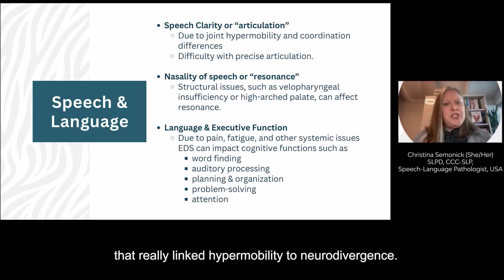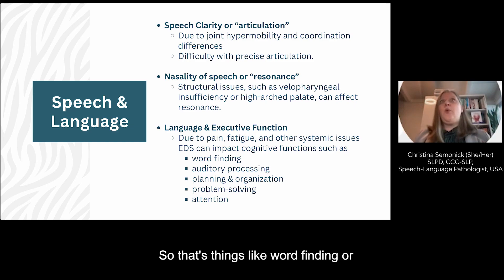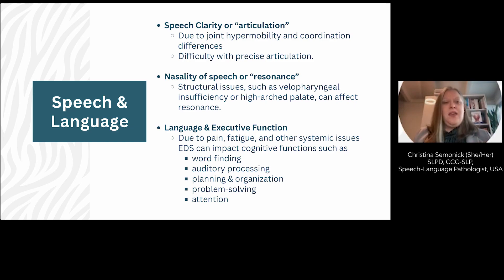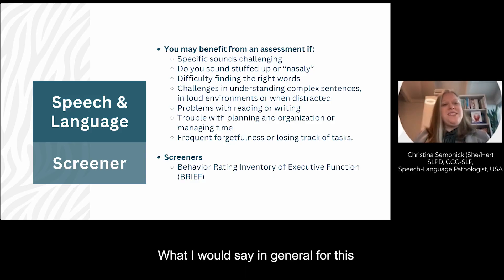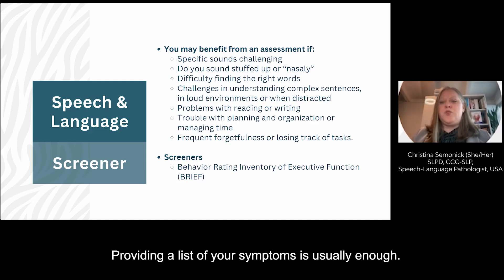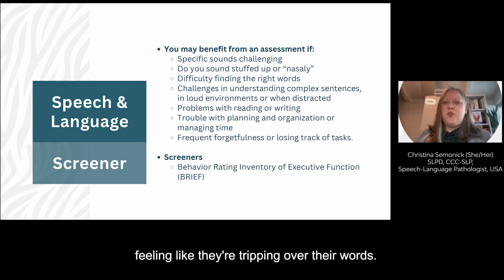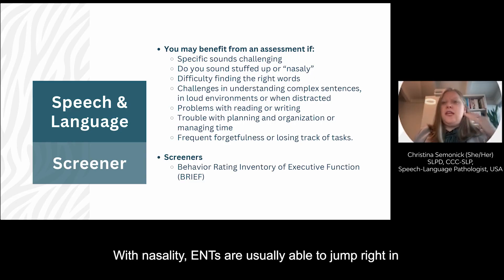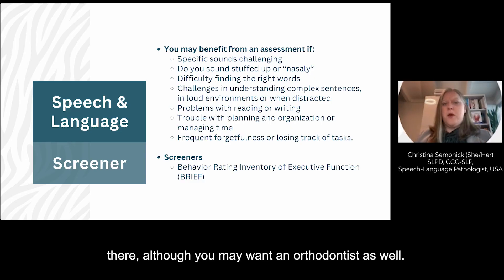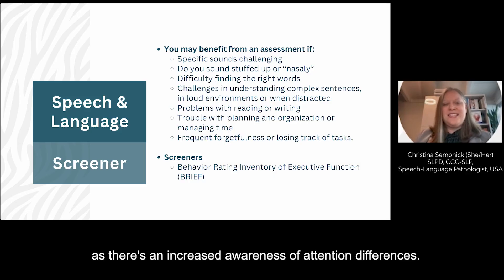There was a study in 2022 that really linked hypermobility to neurodivergence, so we do see a lot of patients who might have difficulty with executive function — things like word finding, organizing your daily tasks, or attention. Luckily, there are SLPs here to help. In general for this section, you usually don't need a formal screener to get a referral; just providing a list of your symptoms is usually enough. People with speech differences coming to my office usually complain of something like a mild lisp, feeling like they're tripping over their words, or difficulty giving a whole presentation. For executive functioning, the BRIEF is a nice quick screen that might be valuable to you.